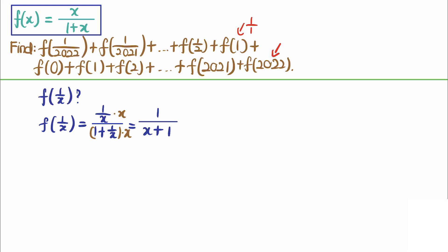Moreover, we can see that if we take f of x plus f of 1 over x, we get x over 1 plus x plus 1 over 1 plus x, which is just x plus 1 over x plus 1, and this is just 1. So the whole trick is realizing this fact.